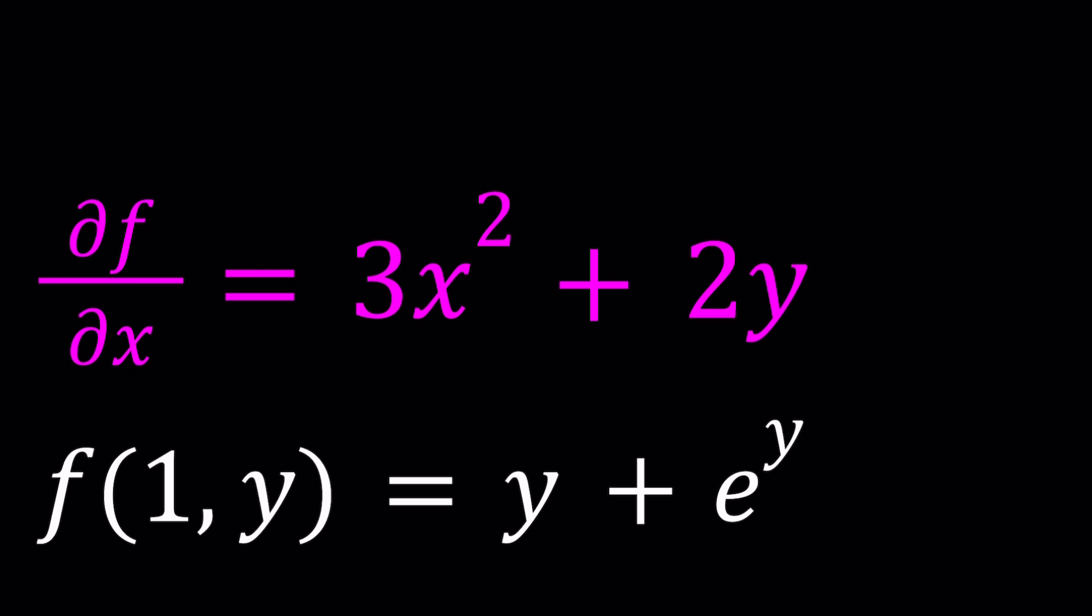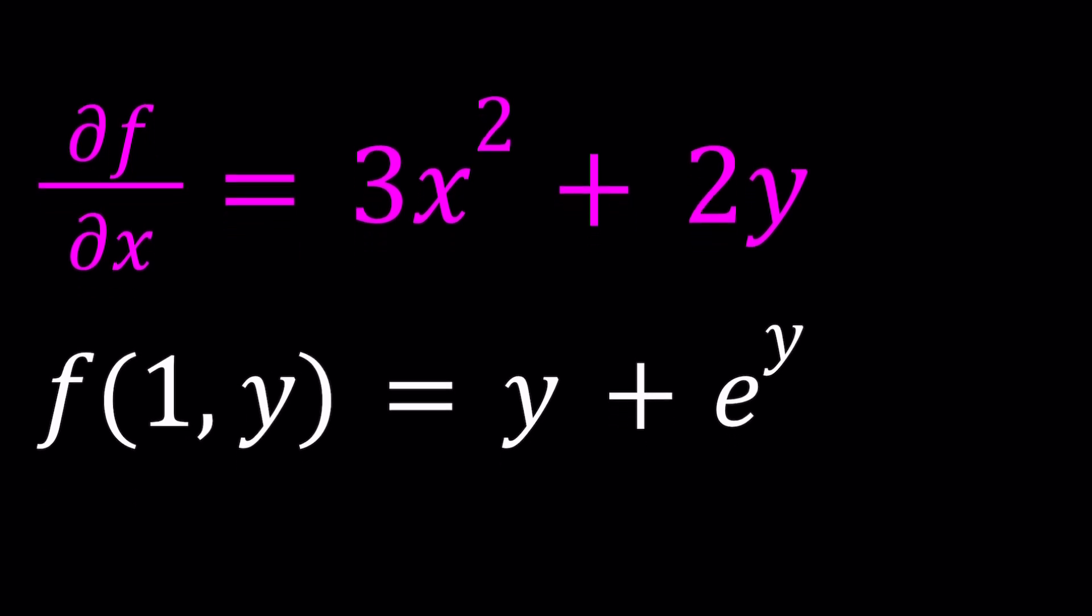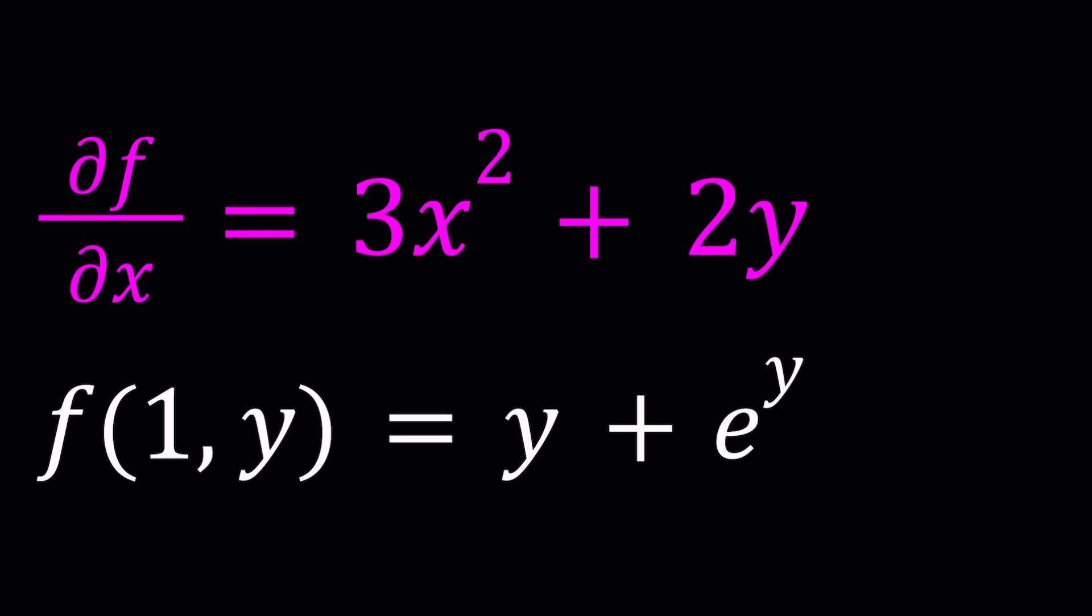So we have ∂f/∂x - some people call this del, though del also means something else. We have the partial derivative of f with respect to x, and it's equal to 3x² + 2y. And we're supposed to solve for f, but we're also given another equation, which I'll talk about. f(1, y) is given as y + e^y, and there's a good reason why this was given.